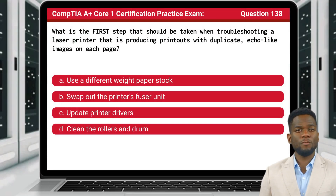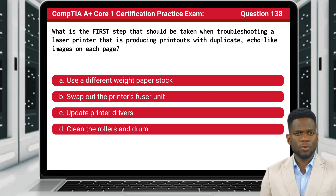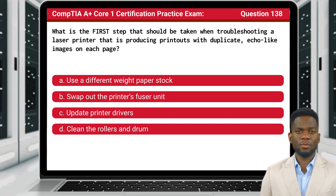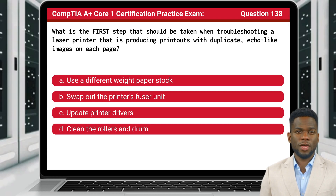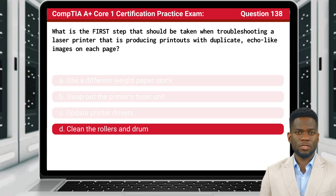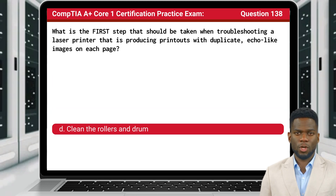Question 138. What is the first step that should be taken when troubleshooting a laser printer that is producing printouts with duplicate, echo-like images on each page? The answer is D: clean the rollers and drum.